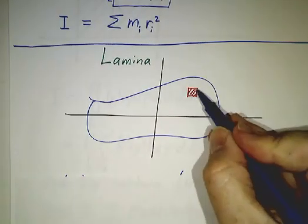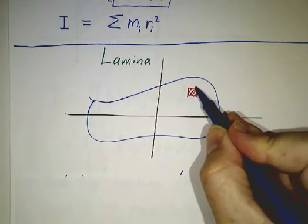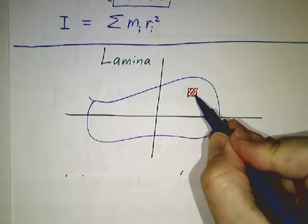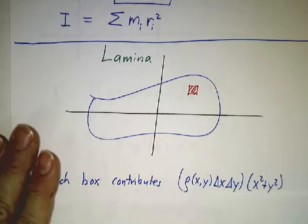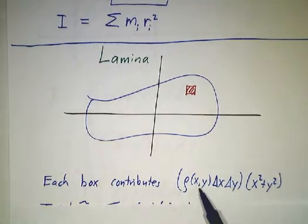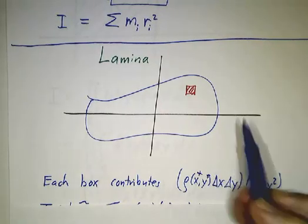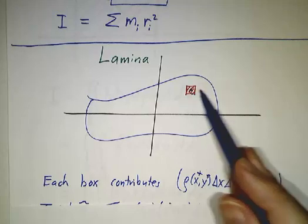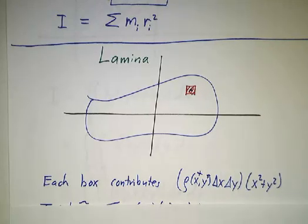We chop it up into boxes and we say, hey, what about this little box? This little box has mass density times area. Well, not exactly because you have to pick a particular point to represent the density and the density isn't actually constant, but close enough. And then you multiply by distance squared and the distance squared is x² + y².